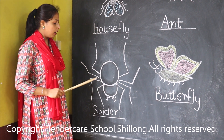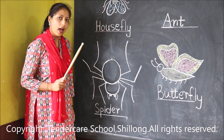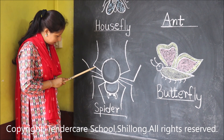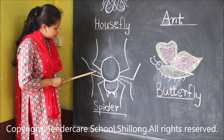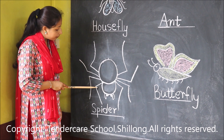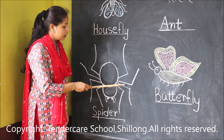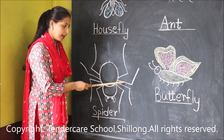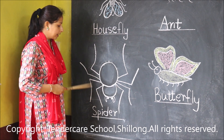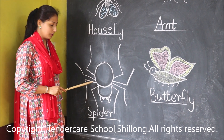How many legs does a spider have? Let us count. One, two, three, four, five, six, seven, eight. Eight legs. A spider has eight legs.